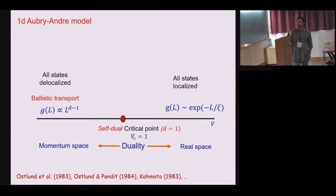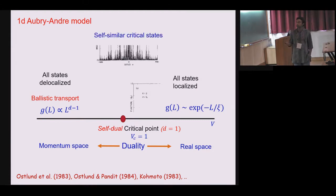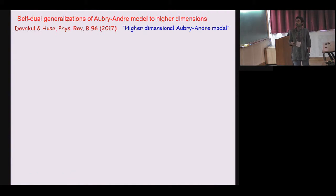And it turns out that this model which was shown by Aubry-Andre has a particular duality. Basically these two phases, the delocalized and localized phases are connected by a duality between momentum and real space. And that basically says that this point which sits here at V equal to 1 is a self dual point which also turns out to be the localization delocalization transition. At this critical point you have critical states which are self similar.